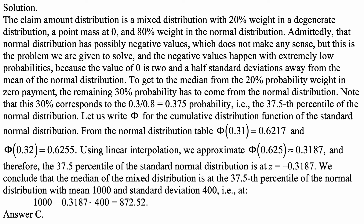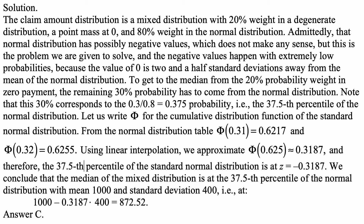What we just established means that the 37.5th percentile of the standard normal distribution is at negative 0.3187. So we conclude that the median of the mixed distribution is the 37.5th percentile of the normal distribution with mean 1,000 and standard deviation 400. That is 1,000 minus 0.3187 times 400, which is approximately 872.52.